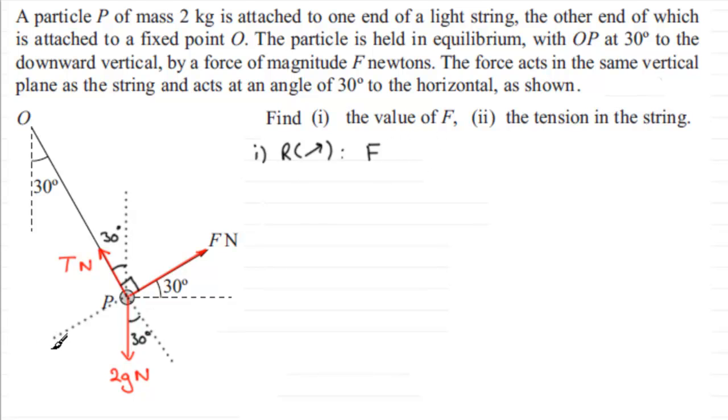It acts down in this direction, opposite sense to this, so it's going to be minus 2g sine 30. This is our resultant force, and that resultant force equals the mass times the acceleration. But it's not moving, so there's no resultant force - it's in equilibrium. Therefore F equals 2g times the sine of 30 degrees. If we take g to be 9.8, then F equals 9.8 exactly.